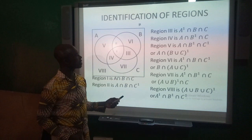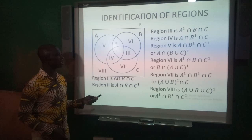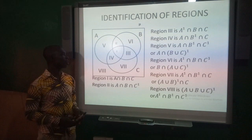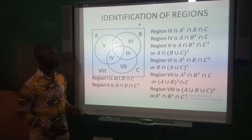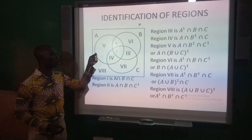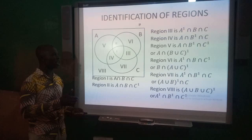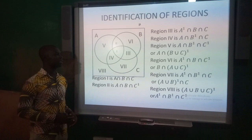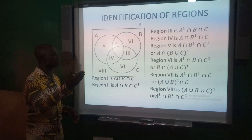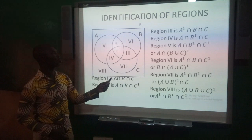Moving on with region IV, this is A intersection B complement intersection C. Region V is referred to as A only. In set language, V is A intersection B complement intersection C complement, or A intersection bracket B union C complement. That gives you the region referred to as A only.